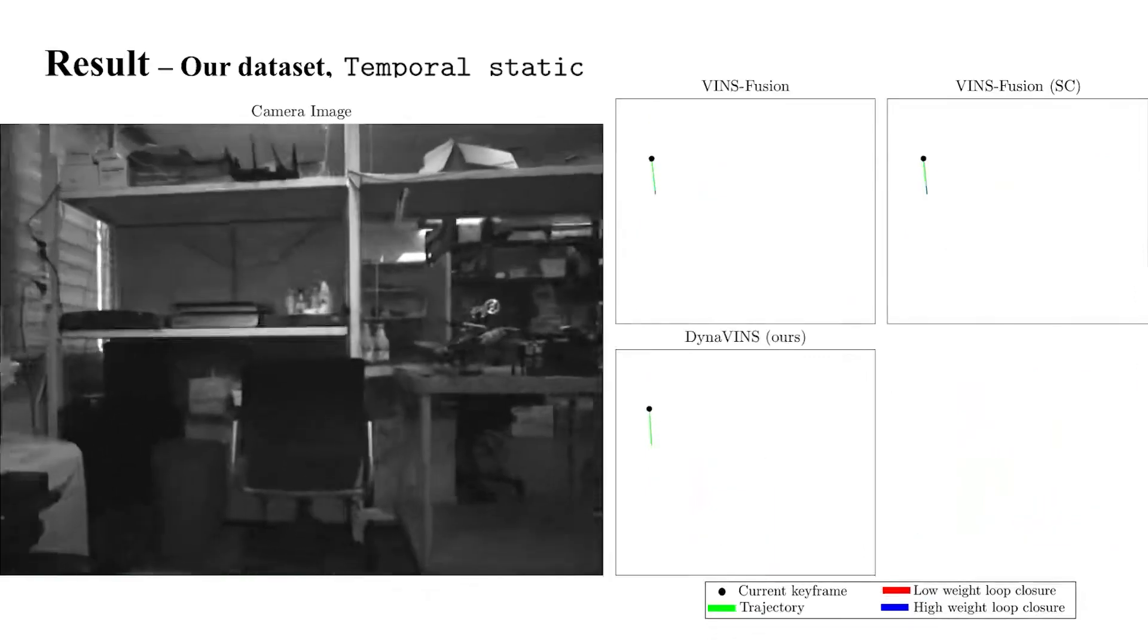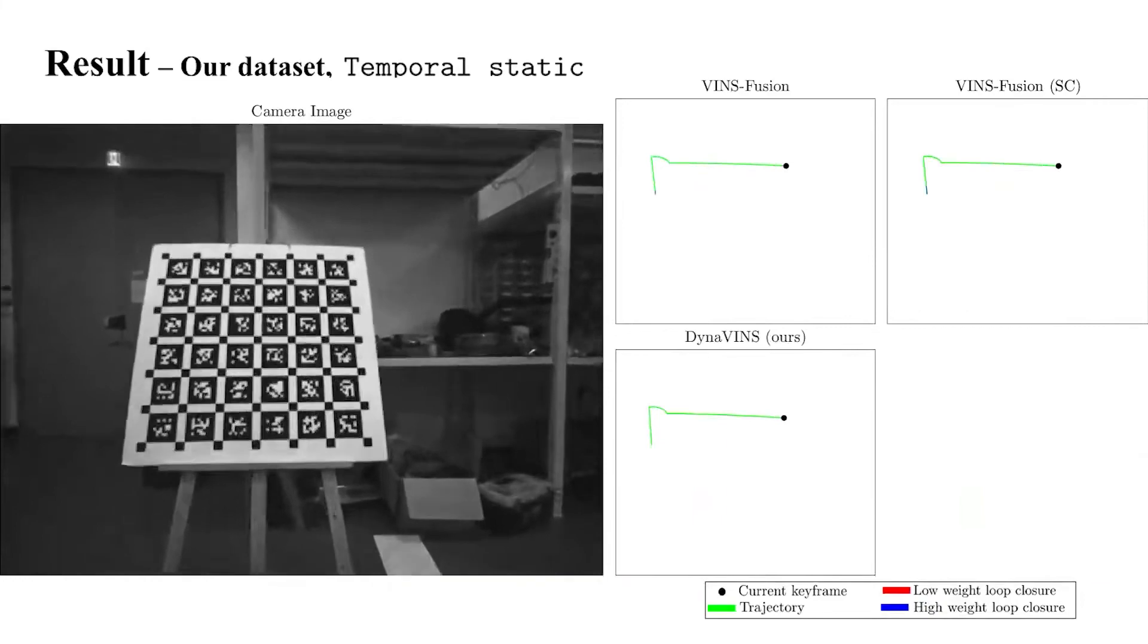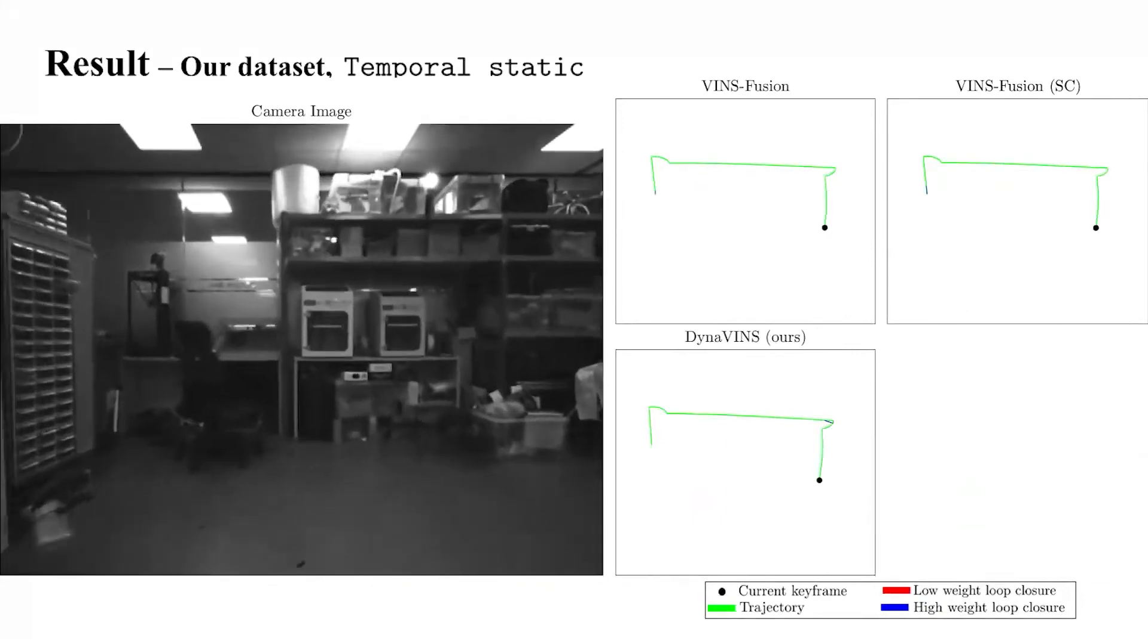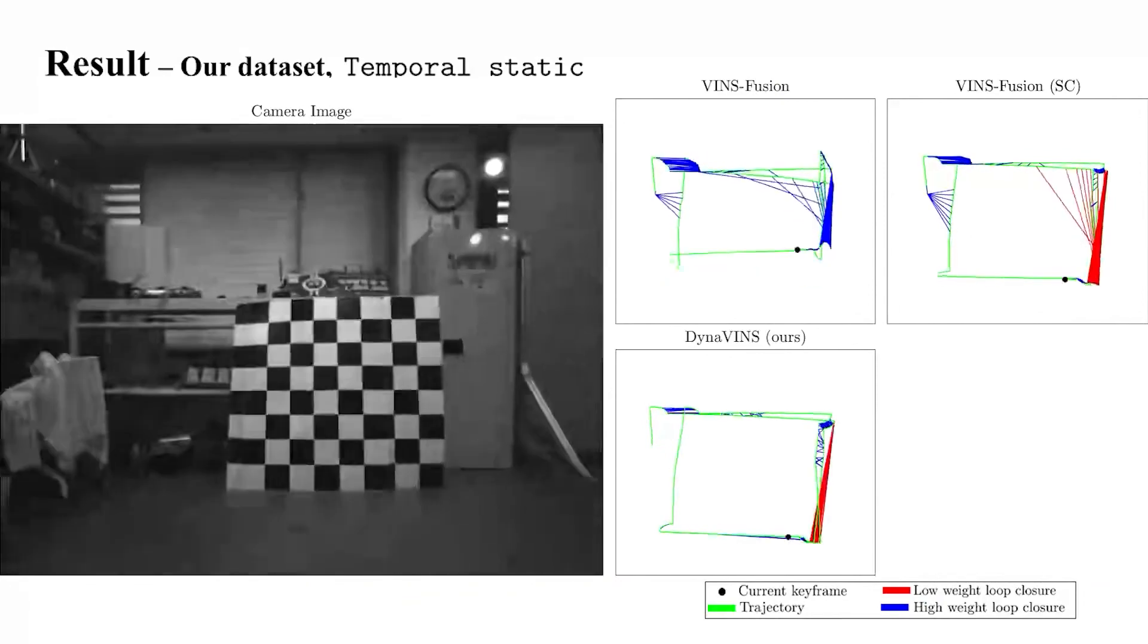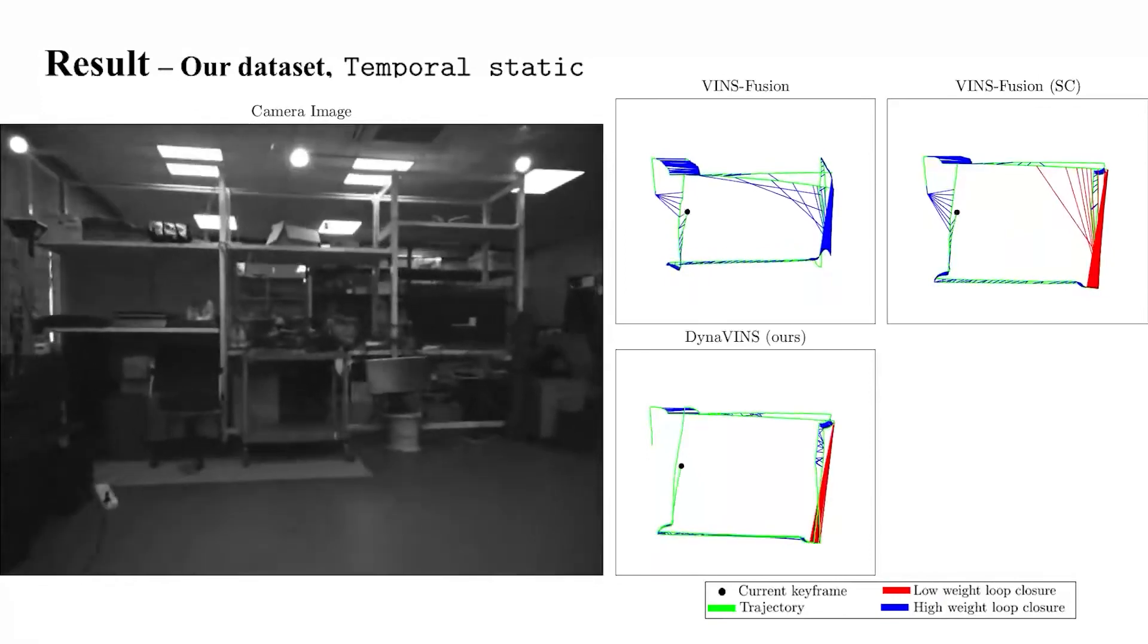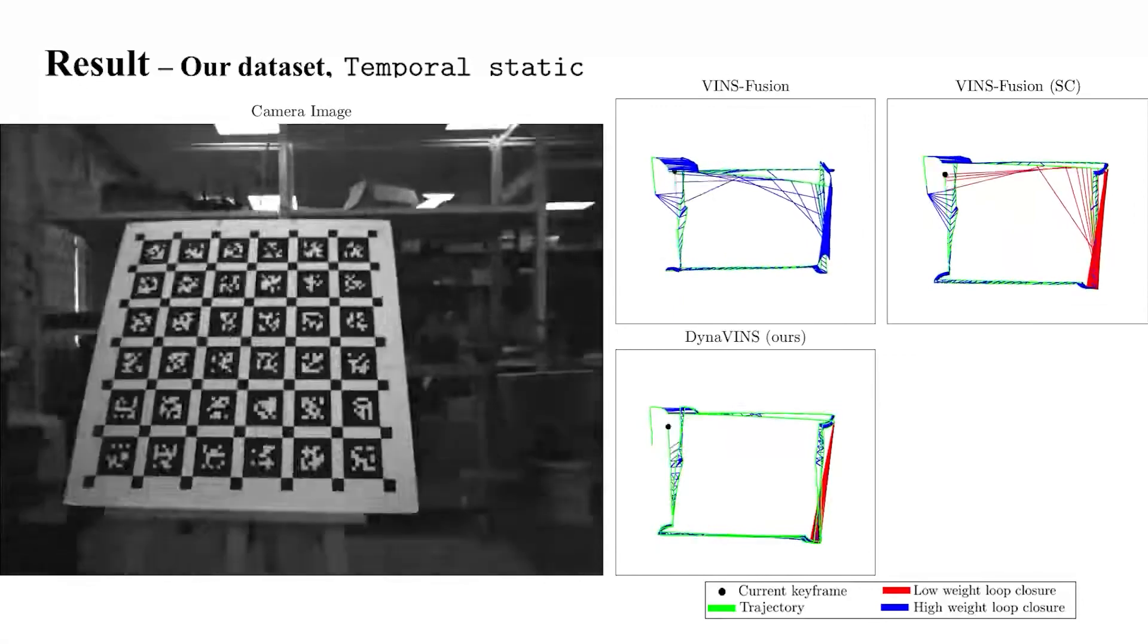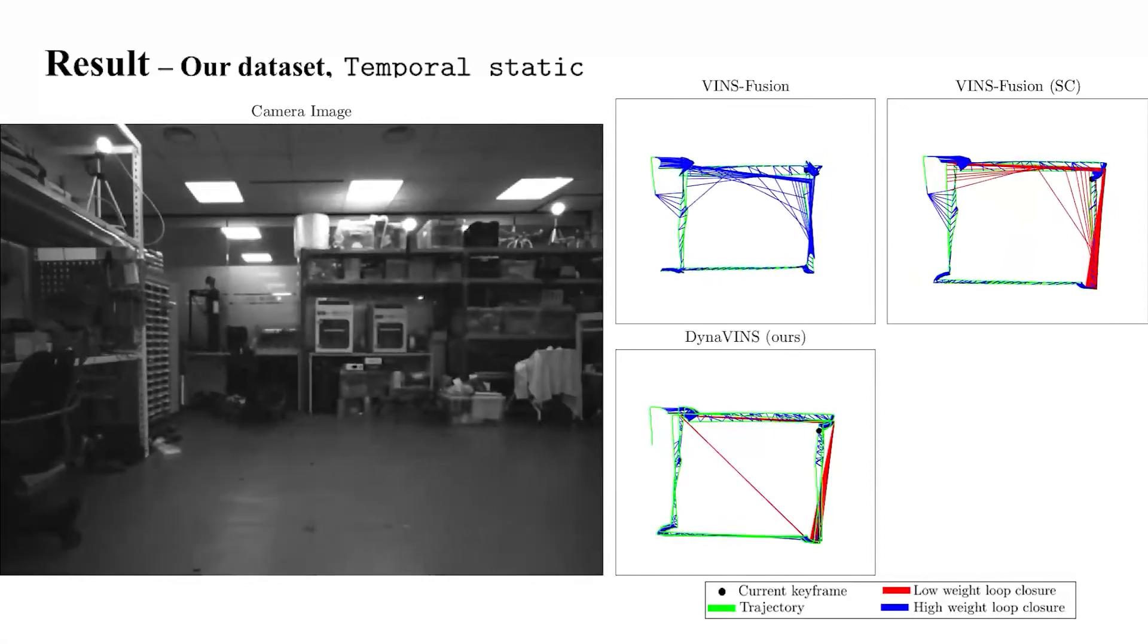Moreover, we combined switchable constraints with VINsFusion and tested on our dataset. Here's the results from temporal static sequence. As you can see, ours and switchable constraints reject the false positive loop closures well. As a result, although switchable constraints also reject the false positive loop closures, ours has a more accurate trajectory result.